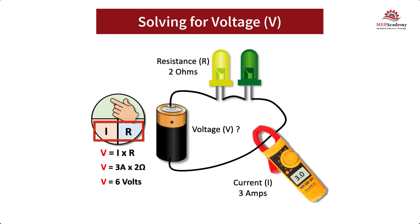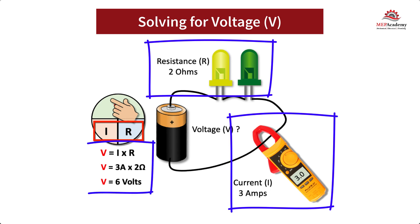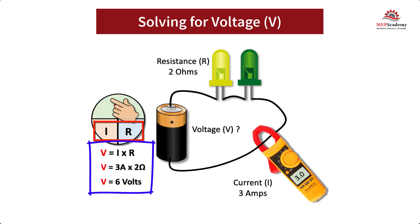Solving for Voltage requires knowing the value of Resistance and Current. Using a digital meter, the Amps can be determined. With this, we enter the Resistance and Amps into the formula to discover the Voltage. Voltage is the force that pushes the Amps through the circuit, while Ohms provide resistance to the current flow.